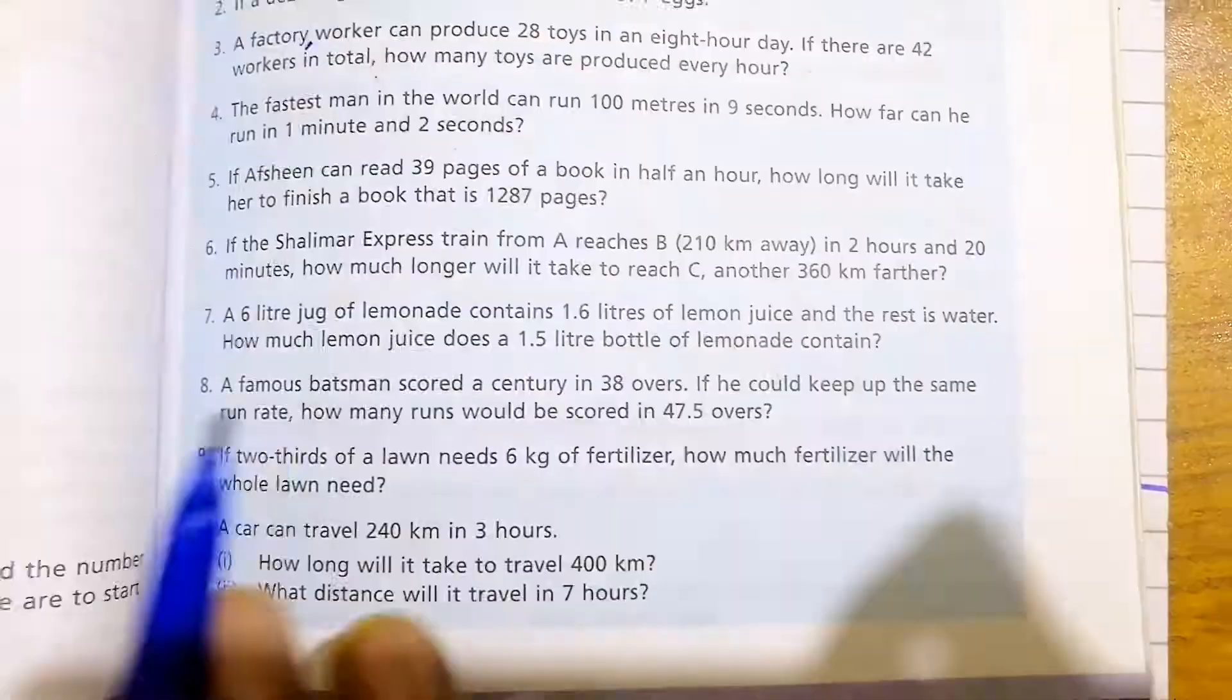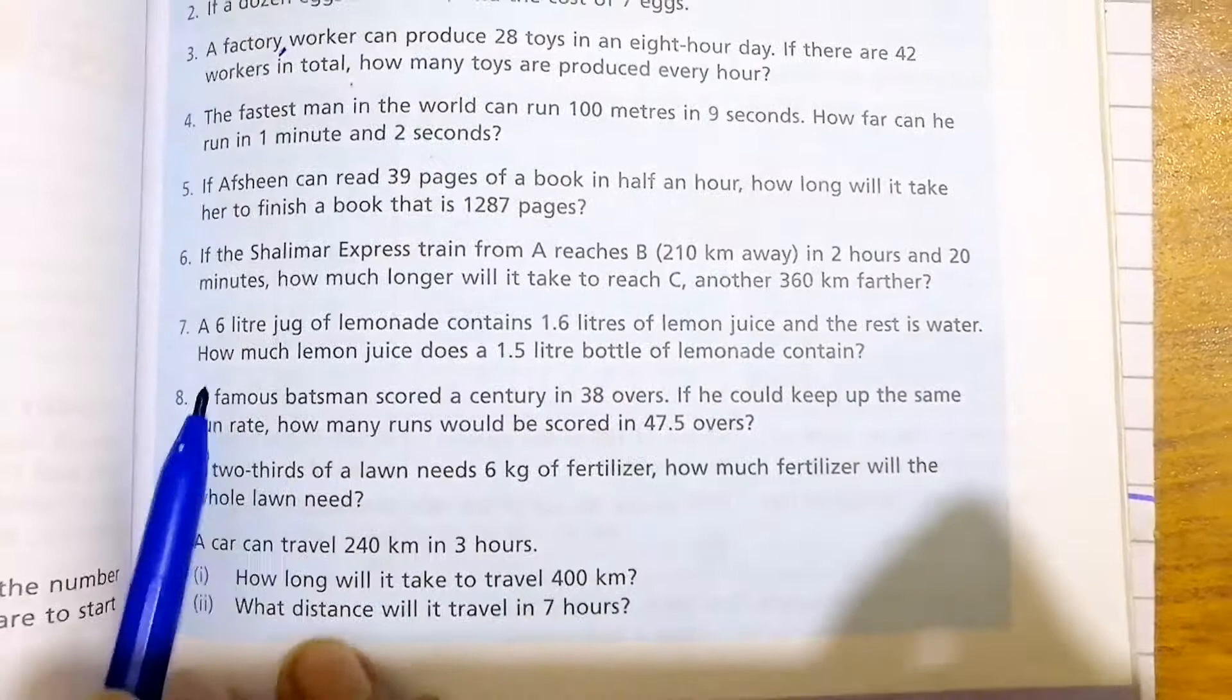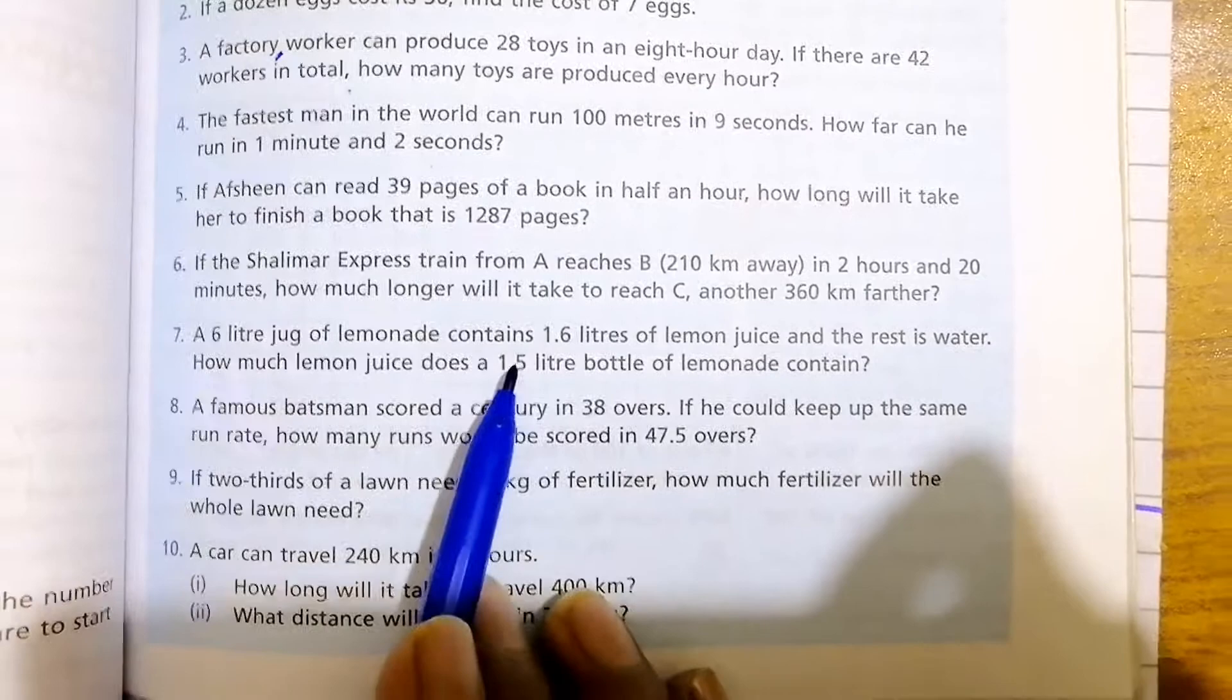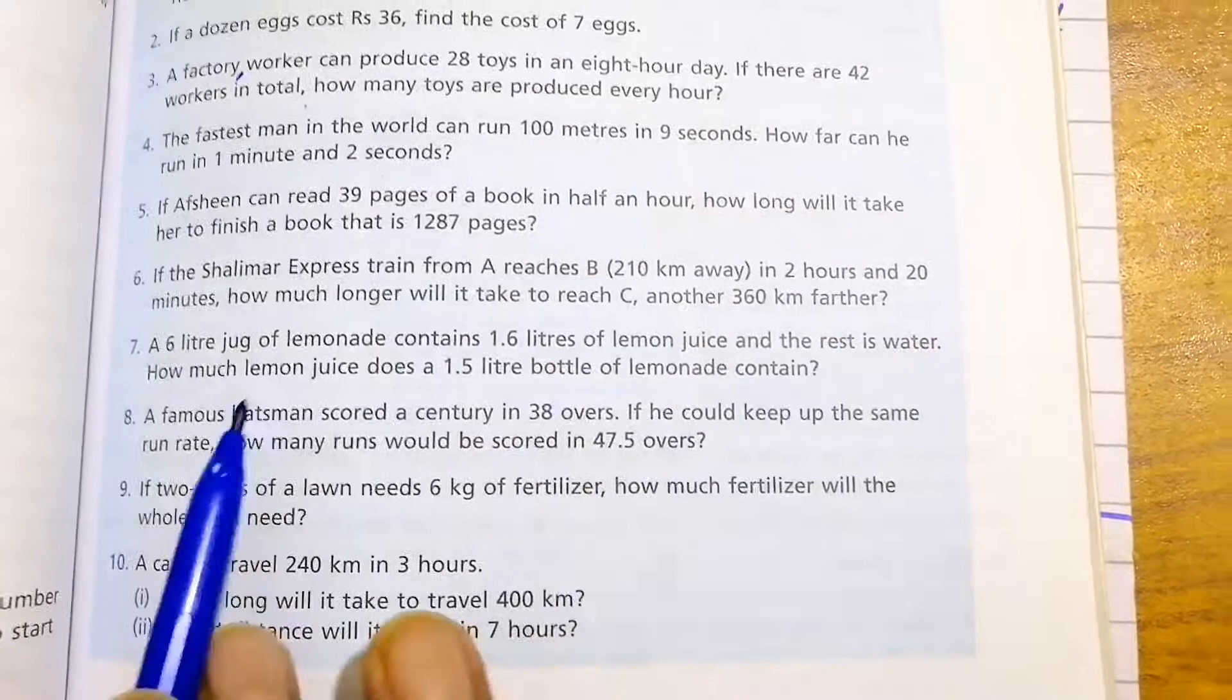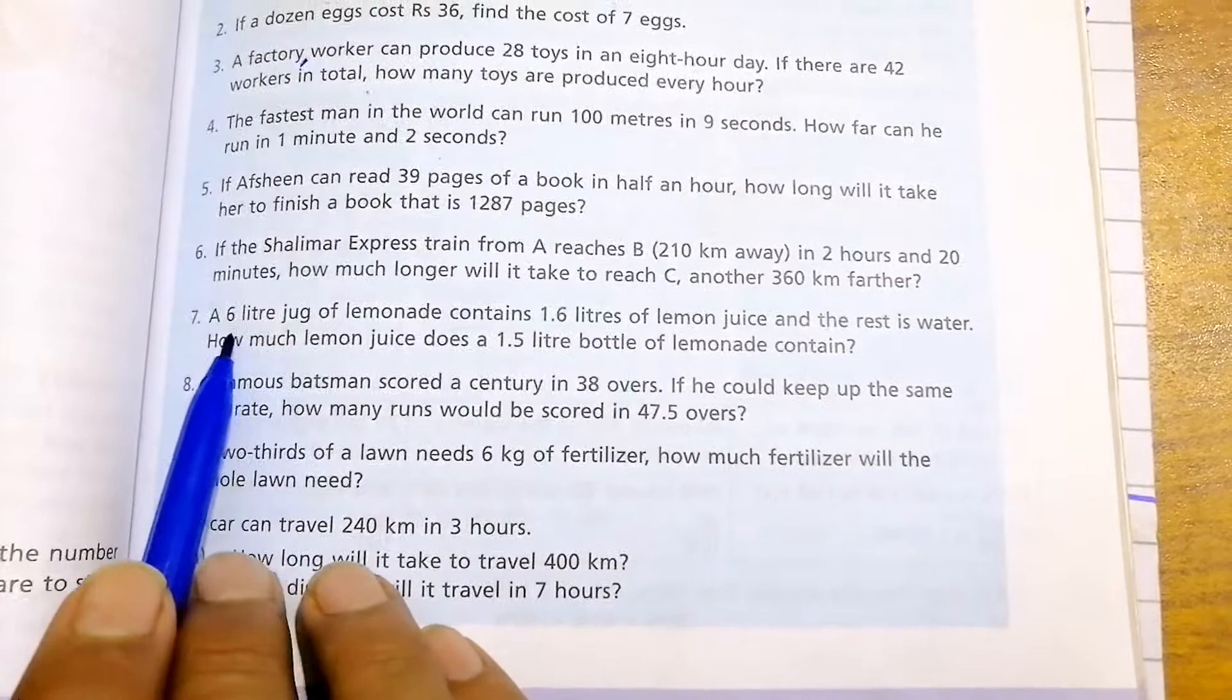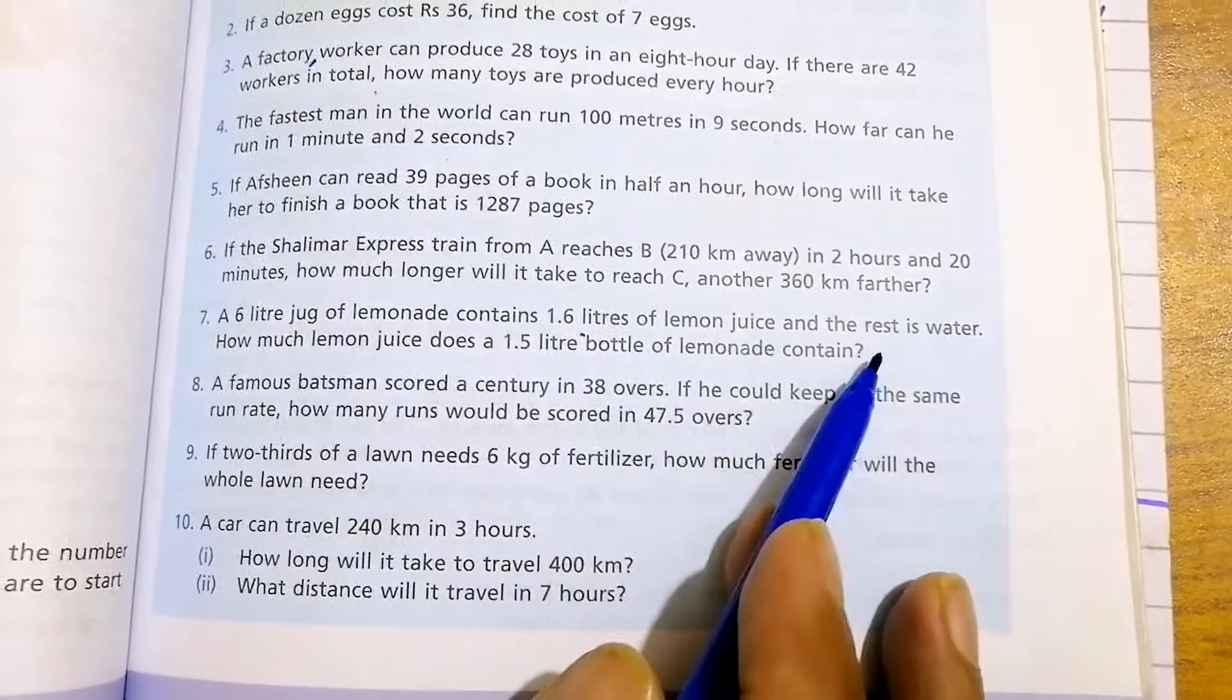Question number 7: 6 liter jug of lemonade contains 1.6 liters of lemon juice and the rest is water. A lemonade jug of 6 liters contains 1.6 liters of lemon juice and rest is water in that juice. How much lemon juice does a 1.5 liter bottle of lemonade contain?